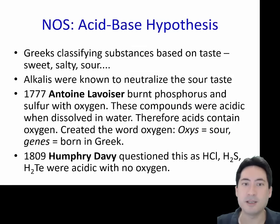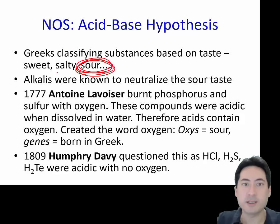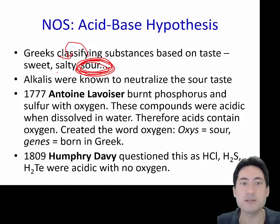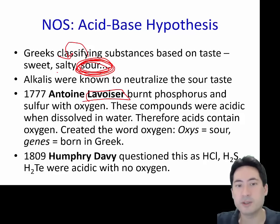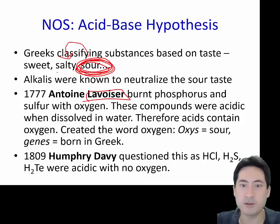Touching on the nature of science: as I started off at the beginning, we started with an acid. Beginning with the Greeks, they classified acids according to taste — acids were sour. Once neutralized, you're left with something salty, which doesn't make for a very nice orange juice. In 1777, Lavoisier burnt various compounds with oxygen that were soluble in water and gave a very sour taste. That's where we get the word oxygen from — 'oxy' for sour and 'gen' for created.